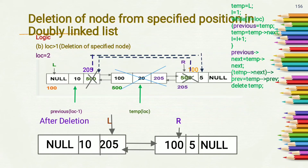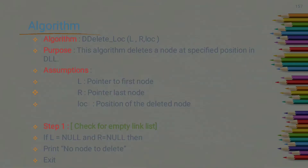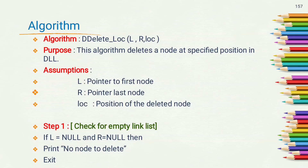After deletion, the doubly linked list contains two nodes having values 10 and 5; l is pointed to the first node and r is pointed to the last node.